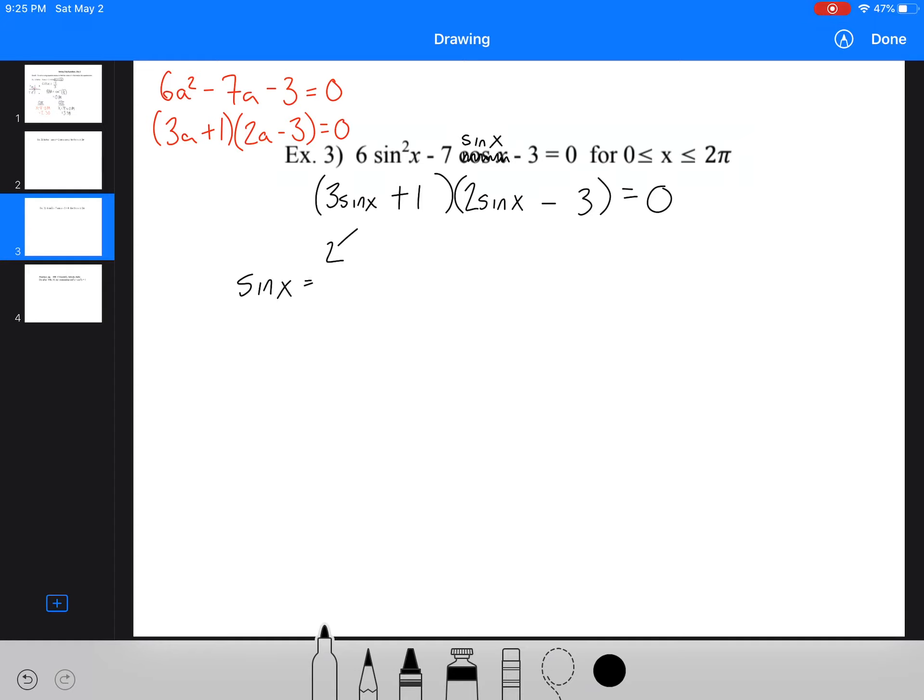So first we've got sine x equals negative 1 over 3. Now that looks like it would be a special triangle, but it's not. So what we can do is just work through c, a, s, t. We're negative sine, so we're in quadrants 3 and 4. Our related acute angle is equal to the sine inverse of 1 over 3. I take the positive value, sine inverse of it. So a third, and we're going to have point, we'll call it point 0400, because it's point 339, so we'll just round up.